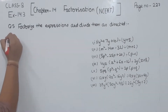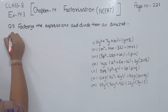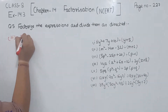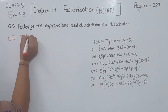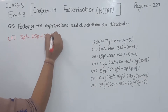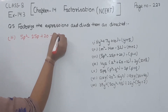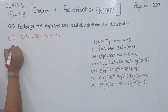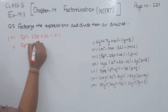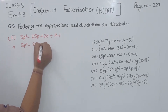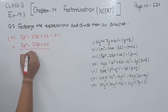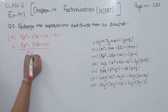Now comes to part 3. This one we are having is 5p squared minus 25p plus 20 divided by p minus 1. I am going to write this as 5p squared minus 25p plus 20 divided by p minus 1.